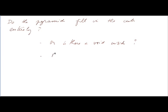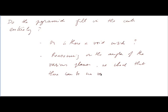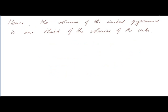The reasoning on the angles of the various planes, it is easy to check and we check that there can be no void inside. Hence the volume of the initial pyramid is one third of the volume of the cube.